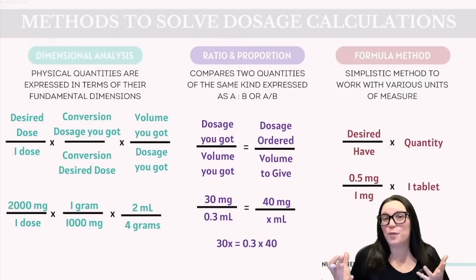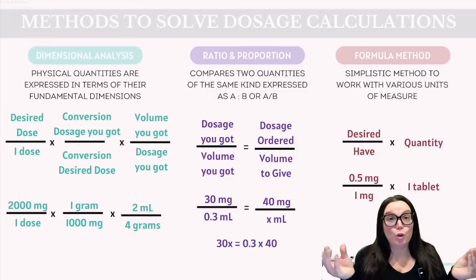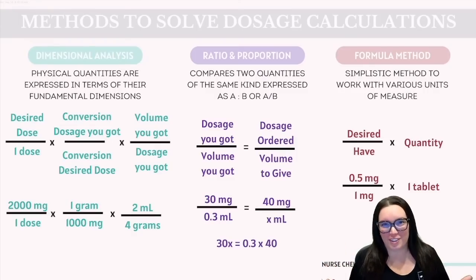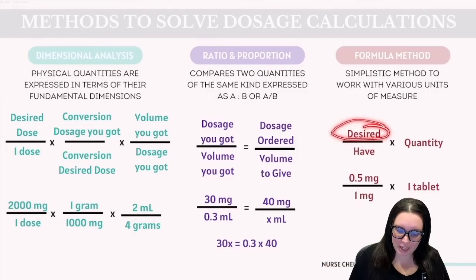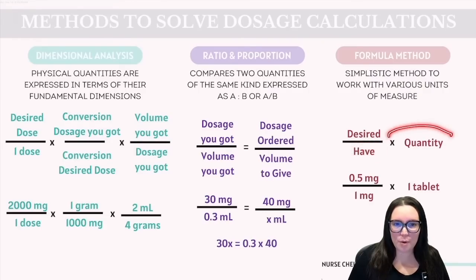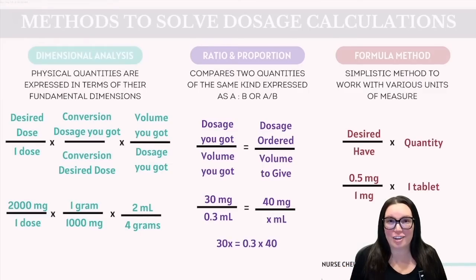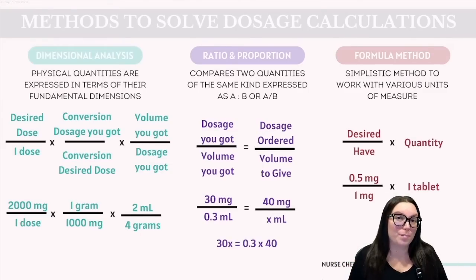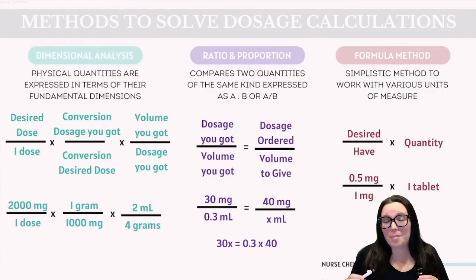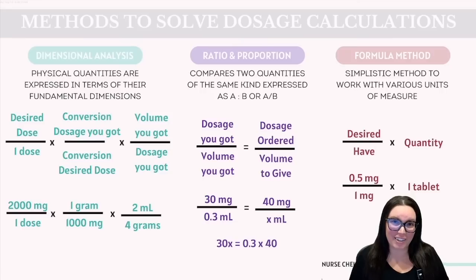Finally, we have the formula method — this was huge when I was in nursing school. It's pretty straightforward: desired medication dose over the medication dose you have, multiplied by the quantity, which is the form or amount of medication available. It's a simple and direct approach to basic dosage calculations. However, keep in mind that this method might not work for more complex scenarios.